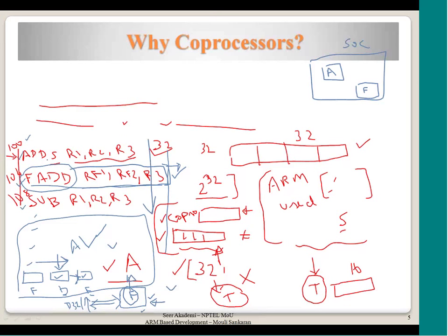There are two pipelines - one inside the floating point processor and ARM also has a pipeline. These instructions flow through both pipelines, and if the particular coprocessor instruction ARM encounters is supported by a coprocessor in the system, then that floating point processor or coprocessor picks up that instruction and starts executing it, informing the ARM that it will take care of that. ARM instructions are all there and in between the floating point instructions are embedded. They occupy a 32-bit wide instruction but in a different format than typical ARM instructions follow.